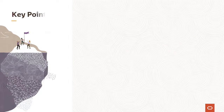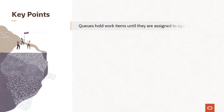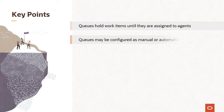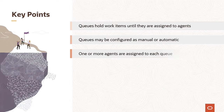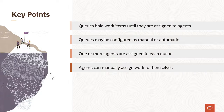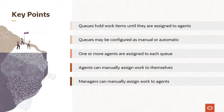In summary, here are the key points about queue assignment. Queues hold work items until they are assigned to agents. Queues may be configured as manual or automatic. One or more agents are assigned to each queue. Agents can manually assign work to themselves, and managers can manually assign work to agents.